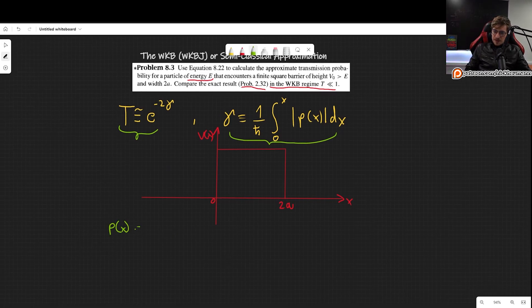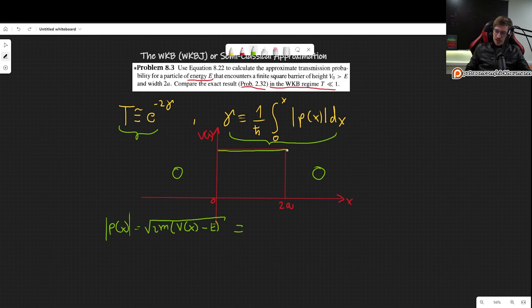The WKB approximation is somewhat difficult to derive, but very easy to apply. All we need to do is calculate this integral and then plug it in here. What is the momentum? The momentum is square root of 2m. Now, consider we are in the region where the potential is greater than the energy, so we have to use the potential minus the energy. We basically factor out a minus sign, but since this is the absolute value, we don't have to worry about anything.